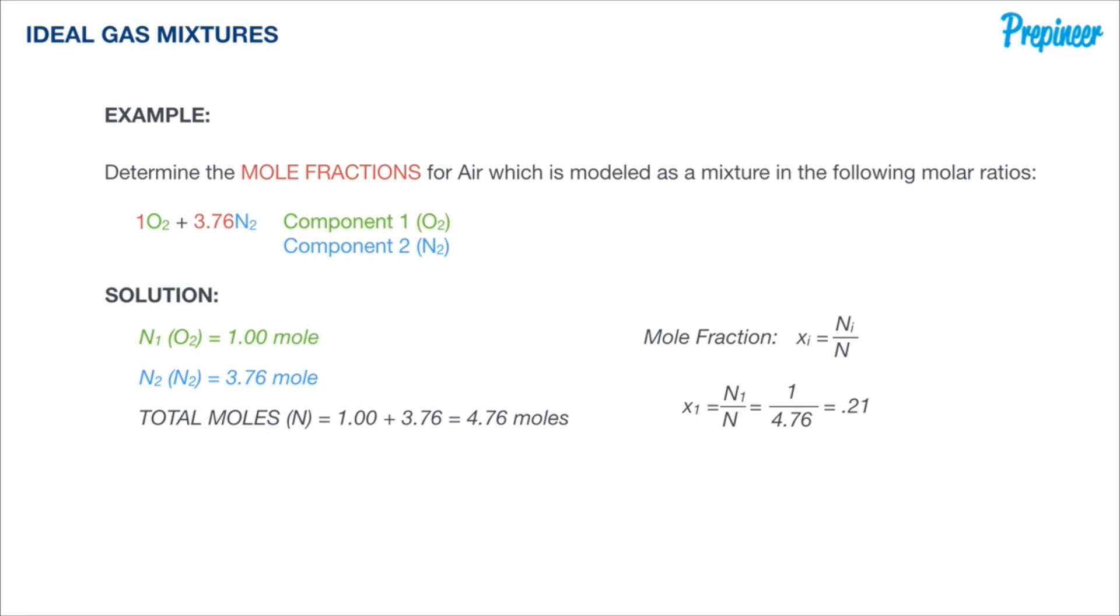Now working our second component, nitrogen, we get 3.76 divided by 4.76 for a mole fraction of 0.79.